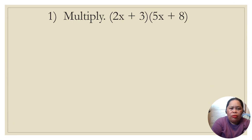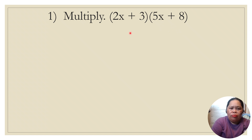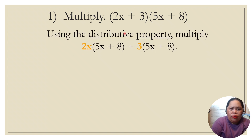Let us multiply the quantity (2x + 3) times the quantity (5x + 8). We have here two binomials. Using distributive property, we multiply 2x and then 3 — we distribute each term of the first binomial to the second.